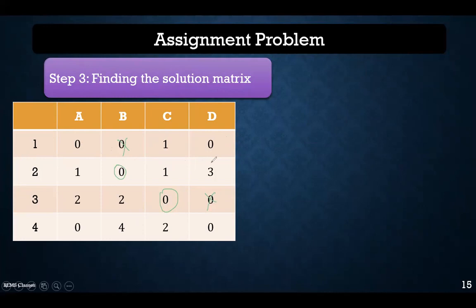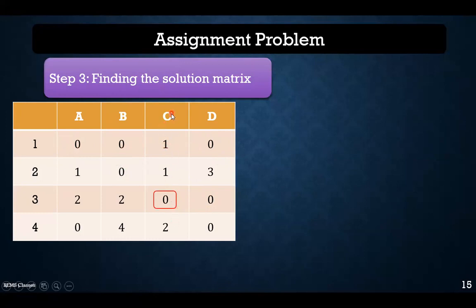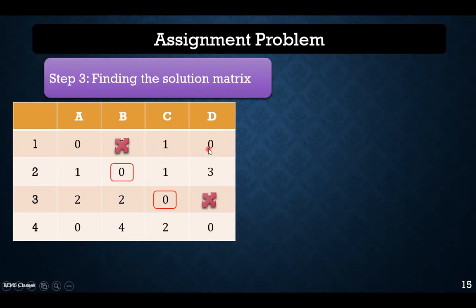We have two different options for picking the zero. We can break the tie arbitrarily and select any one. In the first case, we select one particular zero, and in the second case, we select the other. Since there is only one zero remaining in the next row or column, we pick that zero and cross the others. This gives us two different possible assignments.